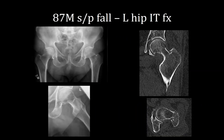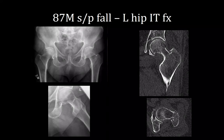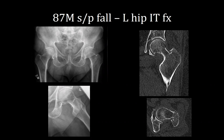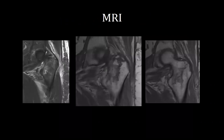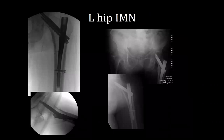The next patient is an 87-year-old male who fell from standing and sustained a left hip greater trochanter fracture associated with an intertrochanteric extension. Initial films in the ED were read as a greater trochanter fracture. CT imaging showed greater trochanter involvement; MRI was obtained within a few hours showing intertrochanteric extension, and he was taken for a left hip intramedullary nailing.